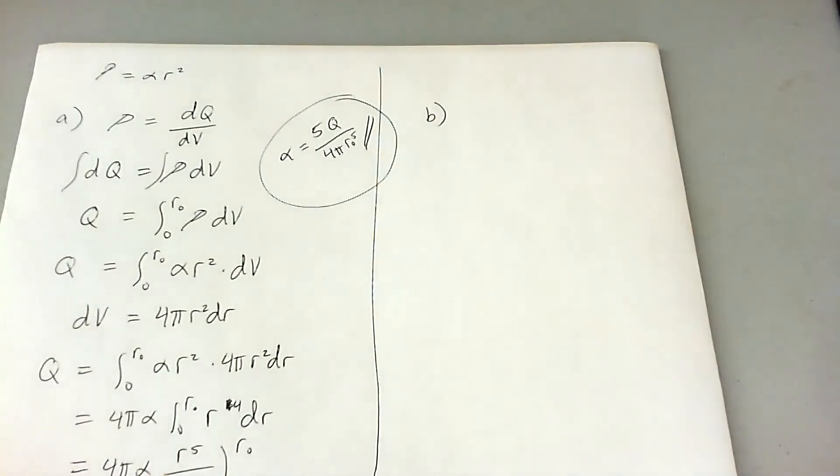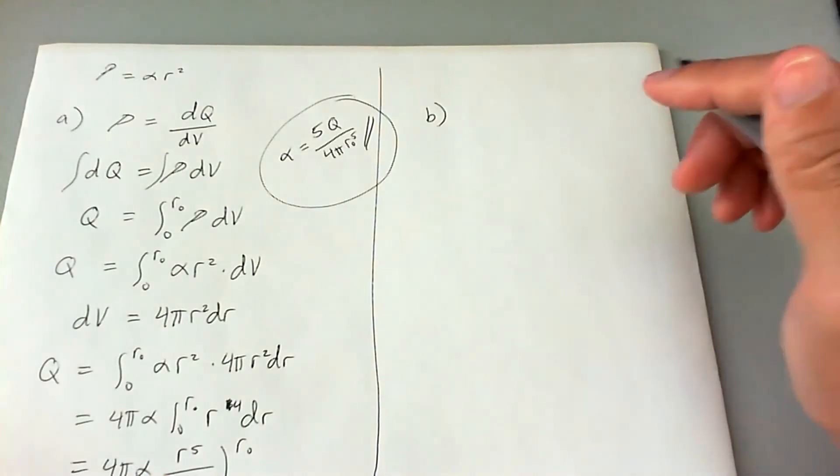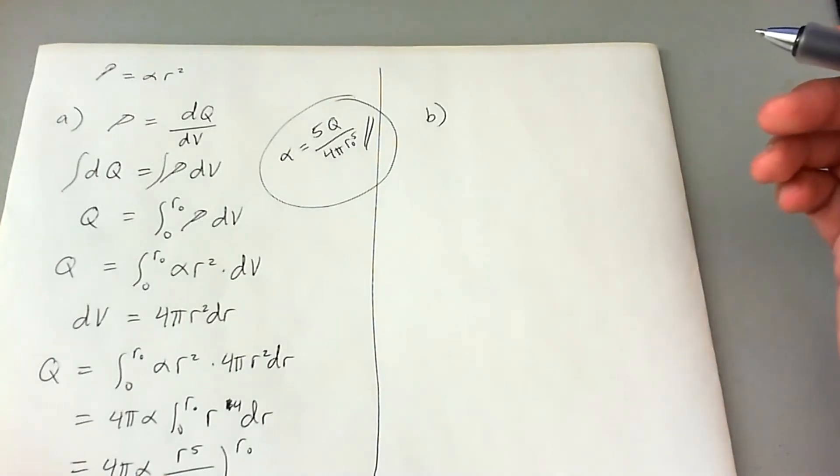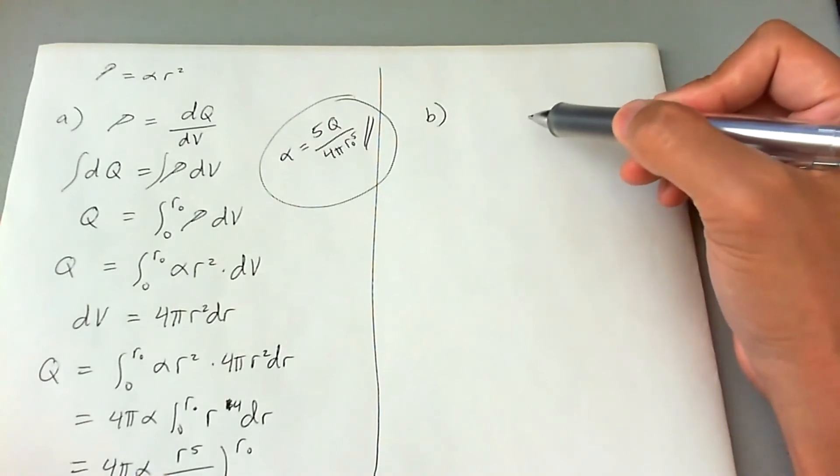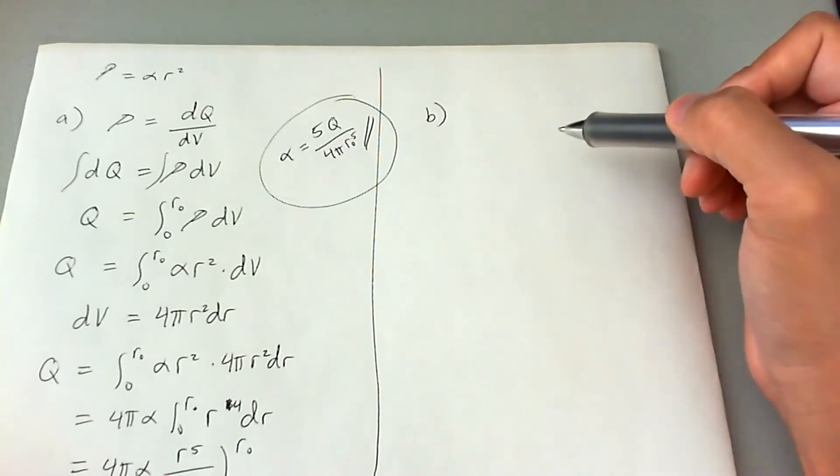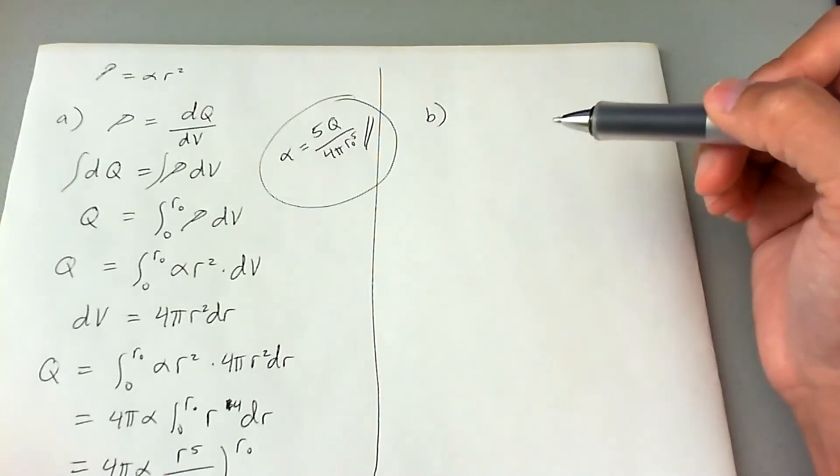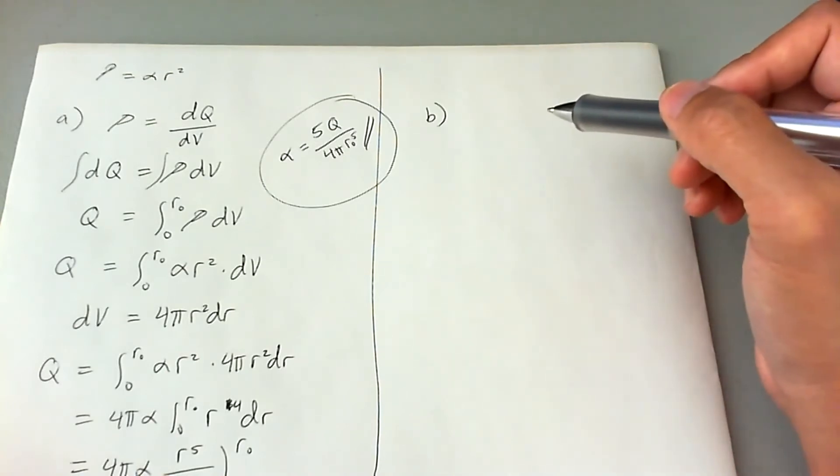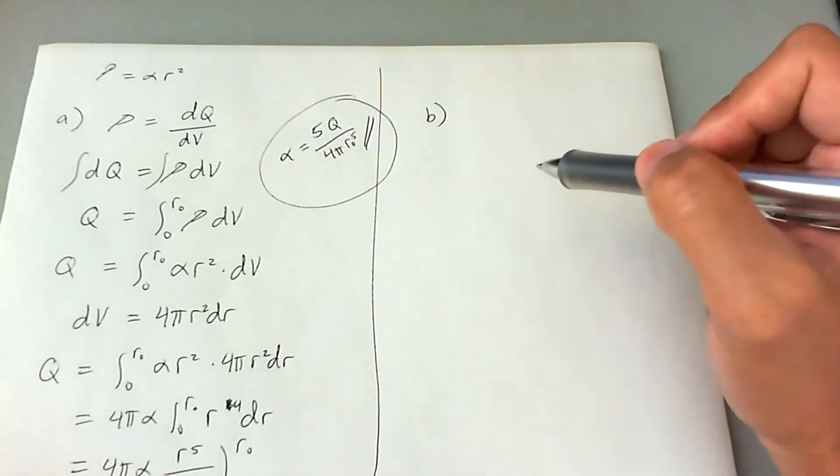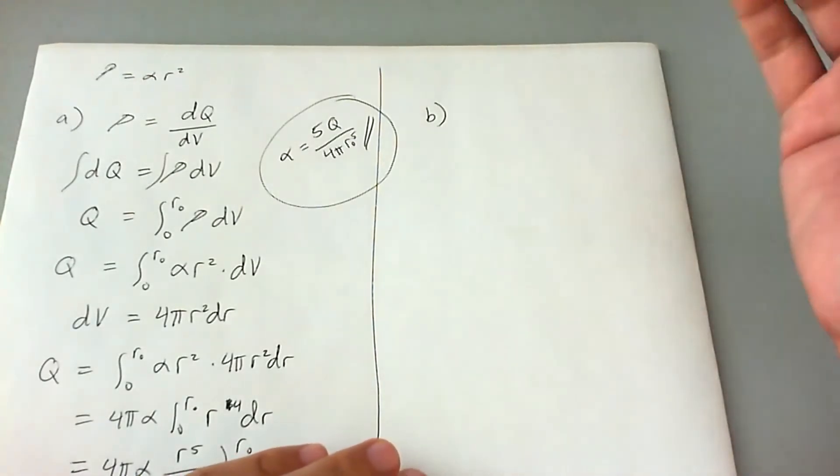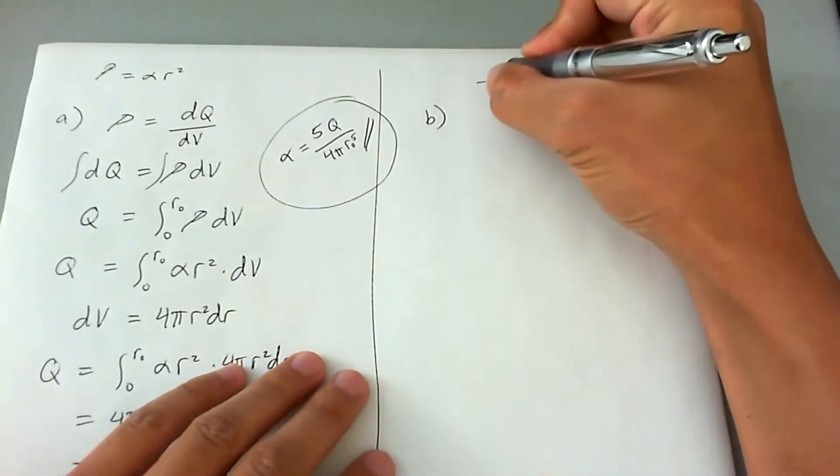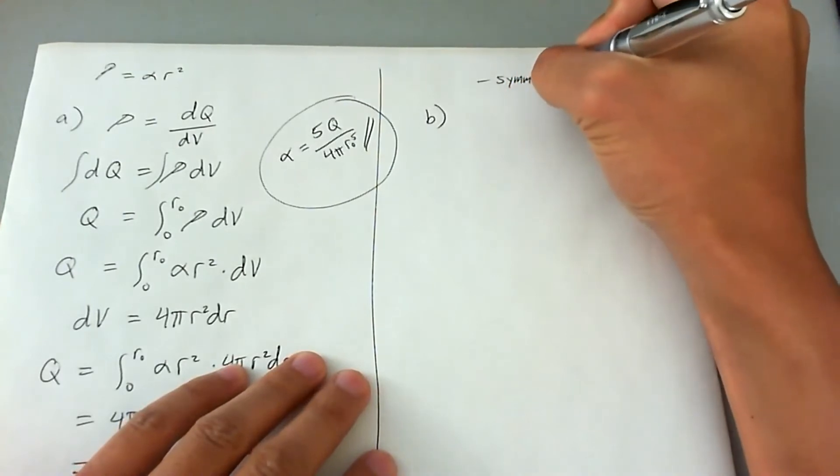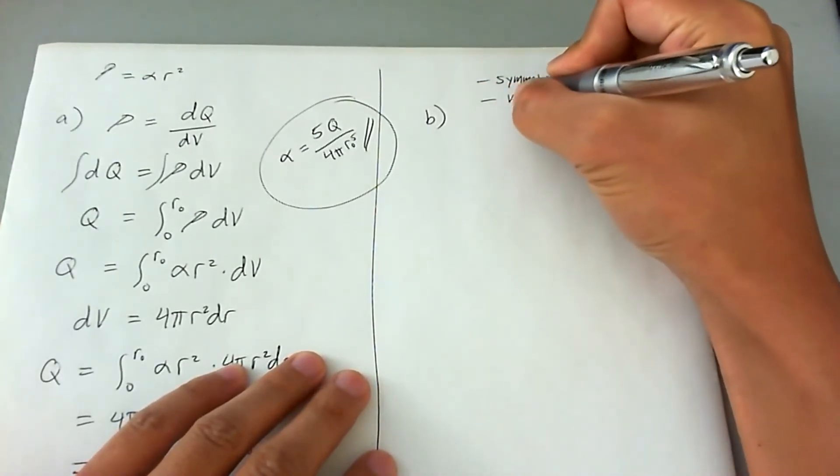Now for part B, they ask us to find the electric field as a function of radius only inside the sphere. If it had to be outside the sphere, then of course we can invoke that physics concept where all the charge is, or we make believe all the charge is concentrated at the center of the sphere. And the E field would simply just be KQ over R squared, R being the distance from outside the sphere, or from the center of the sphere. But since we're dealing with inside the sphere where rho varies with R, we're going to go ahead and invoke two things. We invoke the fact that this problem is symmetrical, and the fact that we have a variable charge density.